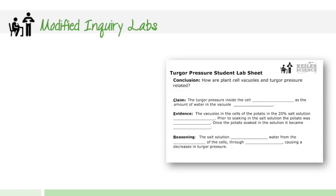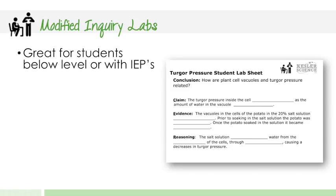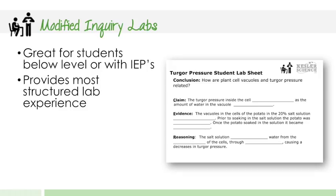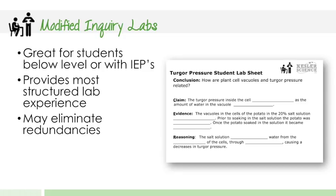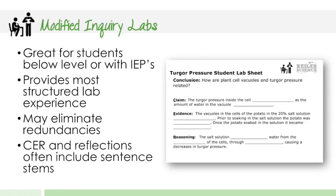The next version of the lab would be called the modified inquiry lab. This is great for students that are below level or have IEPs. This version provides the most structured lab experience. It's going to eliminate some of the redundancies — maybe it takes out some sampling, takes out some questions that may not need to be in there, but still gets the point across of the lab, just like normal modification on a test or assessment in your classroom. The CER and reflections often include sentence stems at the end, so the conclusion on this particular lab actually has sentence stems to allow students to formulate their CER.